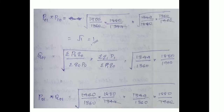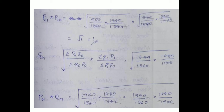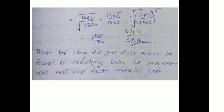Then P01 into Q01: substituting values and canceling common factors, we get the root of 1, which equals 1. For the factor reversal test, P01 into Q01 gives (summation Q1·P1 / summation Q0·P0). Calculating: 1.880 into 1.880 divided by 1.360 into 1.360 gives root of (1.880/1.360) squared, equal to 1.880 divided by 1.360, which equals summation Q1·P1 by summation Q0·P0.